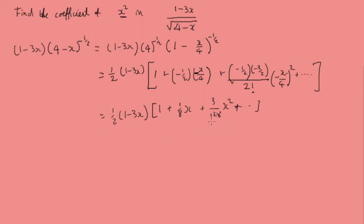Now, we want the x squared term. Here's an x squared term, but if you look here, we need to expand this bracket, and we're going to get another x squared term because we've got an x here. Let's split this up into two parts. We've got 1/2 times (1 + 1/8 x + 3/128 x squared), and then minus 3/2 x times (1 + 1/8 x + 3/128 x squared).